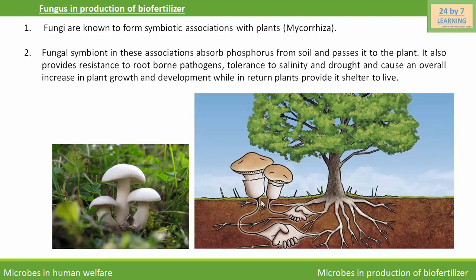The fungal symbiont in these associations absorbs phosphorus from soil and passes it to the plant. It also provides resistance to root-borne pathogens, tolerance to salinity and rot, and thus causes an overall increase in the plant growth and development.